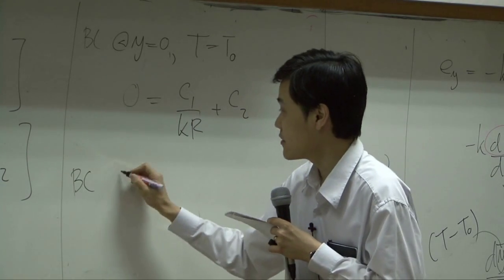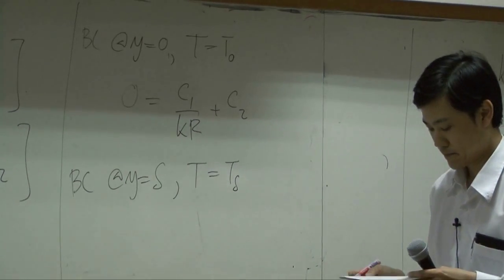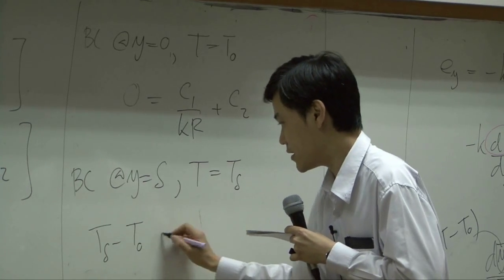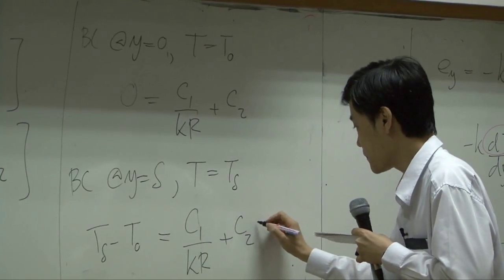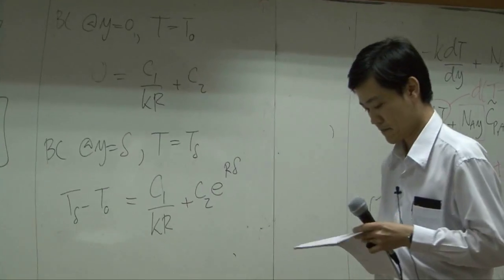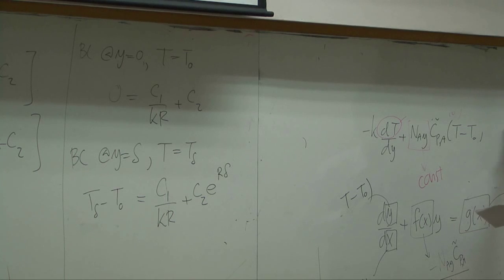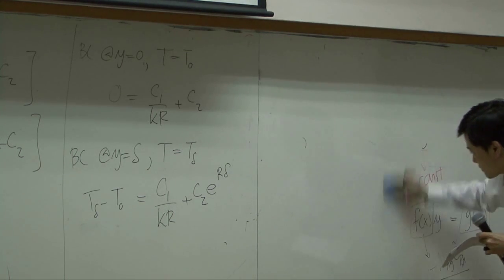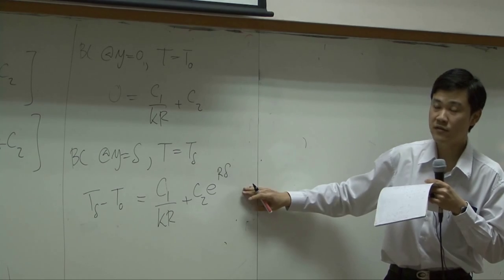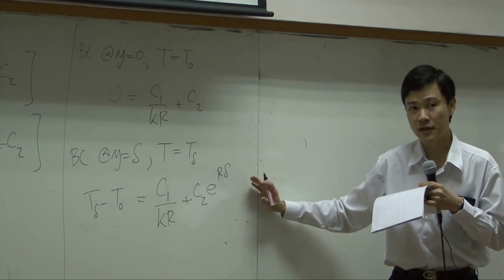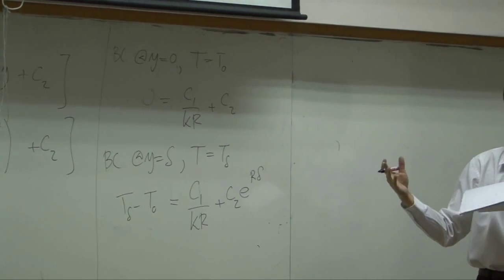Another boundary condition is at Y equal to delta, T equal to T-delta, and then you get T-delta minus T0 equal to C1 over KR plus C2 times e to the power of R-delta. So once you have two equations and two unknowns, you can solve for C1 and C2, plug them back into this equation, and you'll get the temperature profile — straightforward, simple as that.